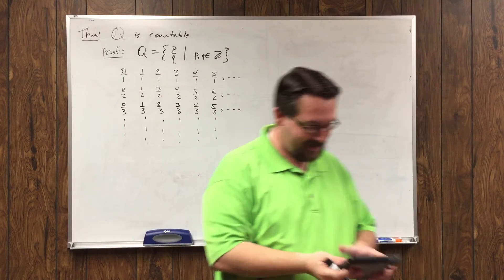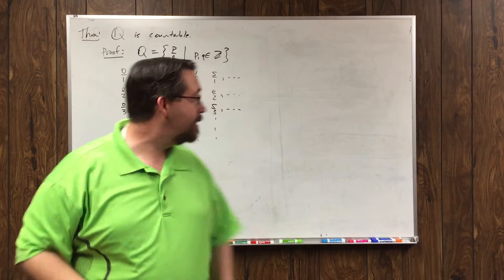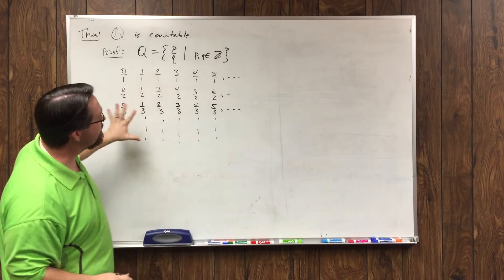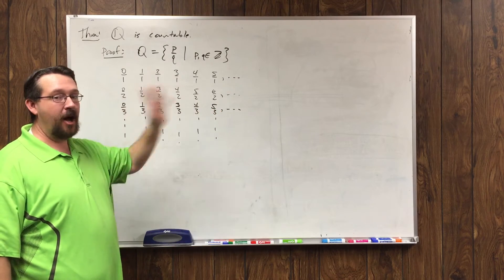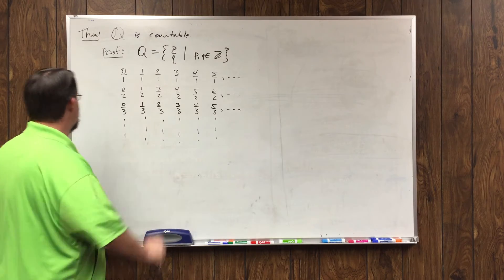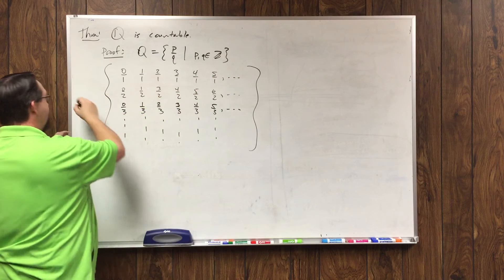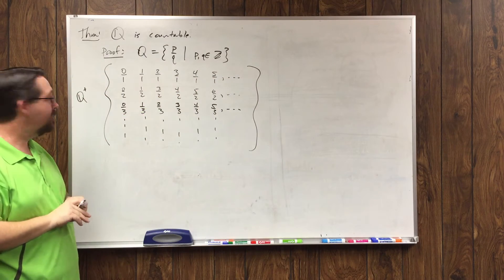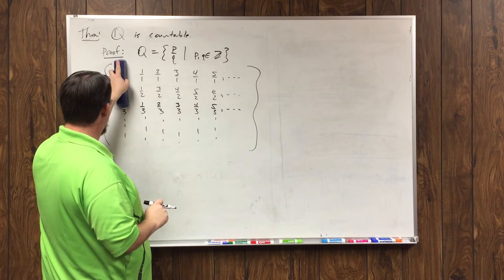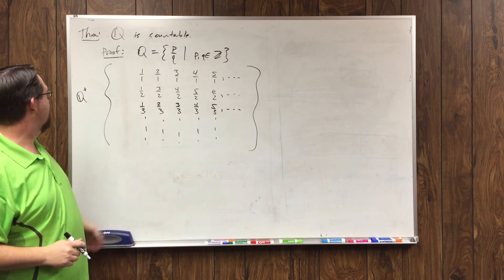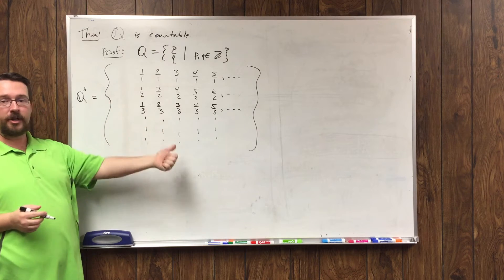Okay, now I claim that this set of all numbers that I've got on the board, by the way this is not all rationals yet. In fact, this is all the non-negative rationals. So this set right here, if you think of it as a set, because it goes on forever this way and on forever this way, is like what I would call Q+, set of all numbers. In fact, Q+ would be without this column. Maybe I'll just erase that. We'll do that set.